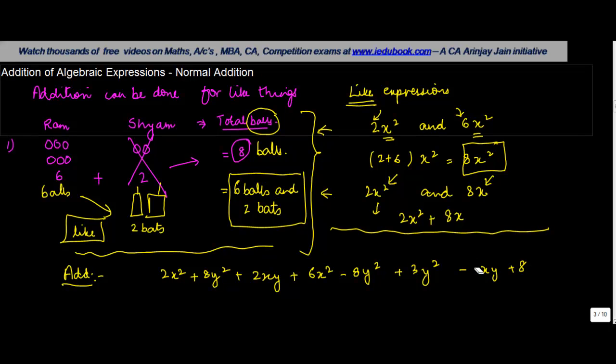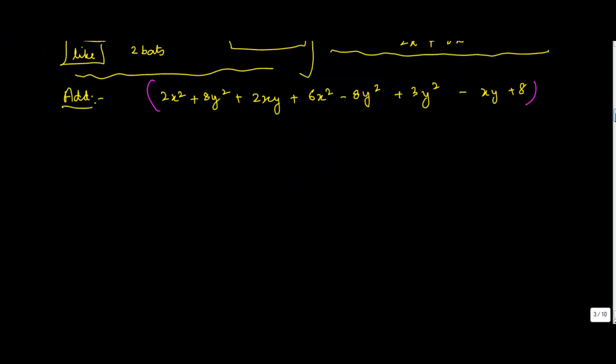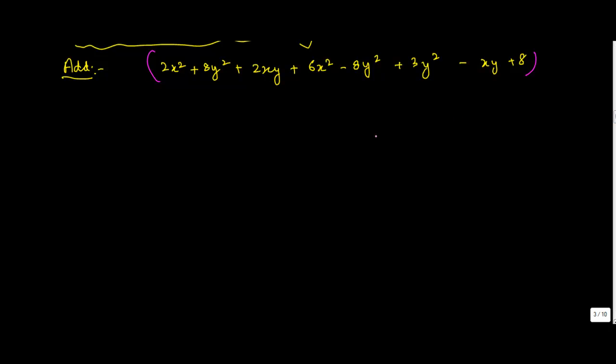Now this seems to be a very lengthy one, right? But it's simple. How do you add up these things? In such cases, basically what you do is you put all the like terms together.